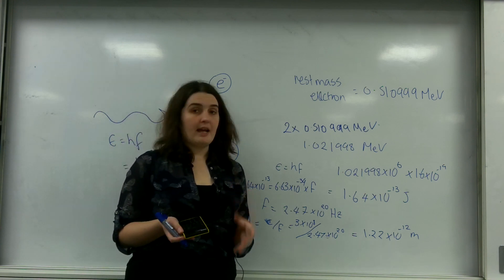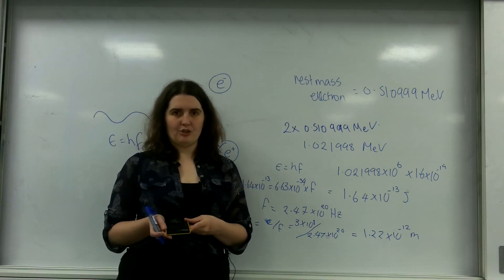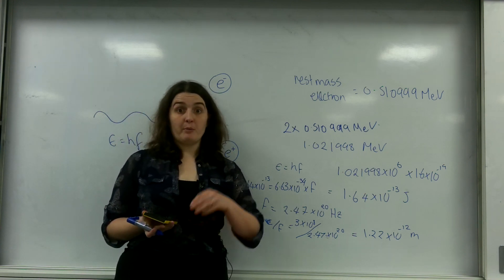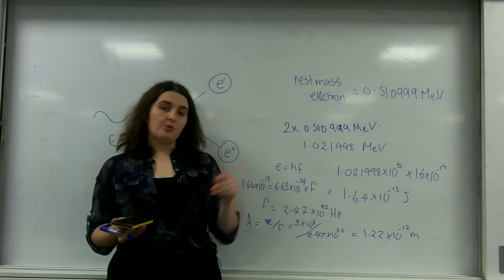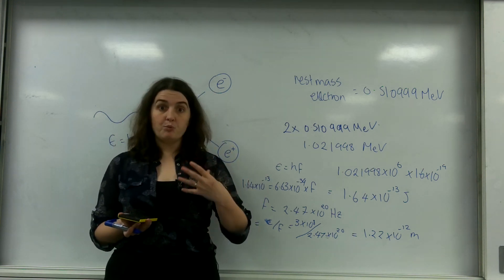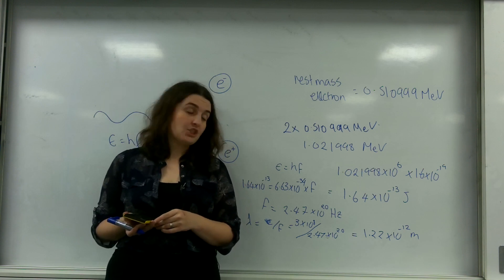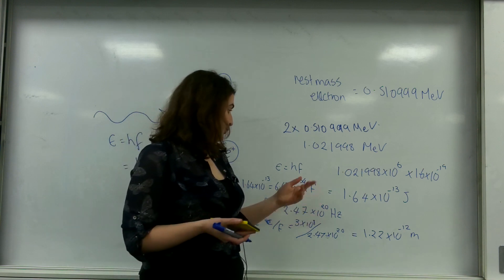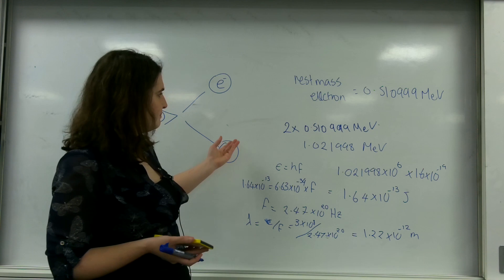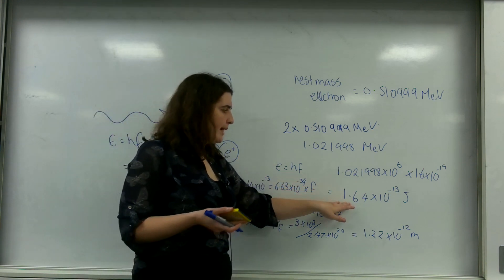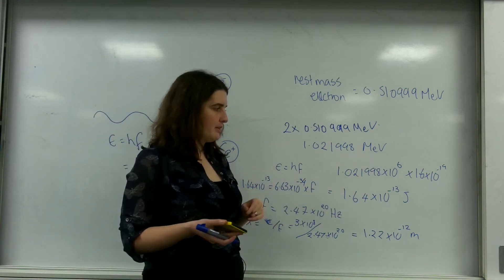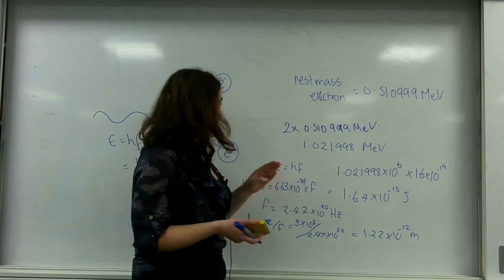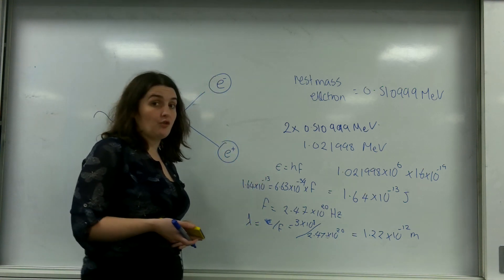That could create an electron and its anti-electron. If I had a photon that was a little bit more than that, these two particles and its anti-particle would gain a little bit of kinetic energy. So if my photon for example had 1.8 times 10 to the minus 13 joules of energy, what would happen is these two would gain kinetic energy based on that.